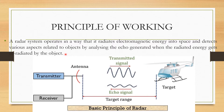The radar system operates in a way that it radiates electromagnetic energy into space and detects various aspects related to objects by analyzing the echo generated by the radiated energy and re-radiated by the object. The transmitted signal goes out, and the echo signal — the re-radiated signal — comes back to the receiver.